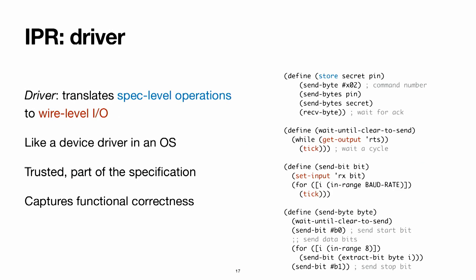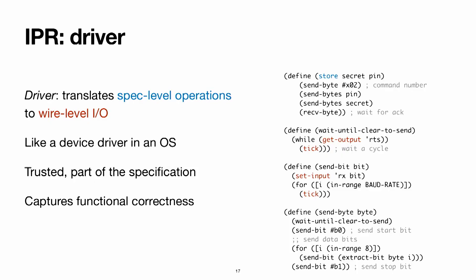In one direction we have a driver, which tells us how to drive signals on the wires to implement the store and retrieve operations — like a device driver in an OS. If I want to send a packet, I need to tell the driver how to poke the network card. The driver describes how to poke the pins of the HSM to implement the store operation, for example. This is a trusted part of our specification because it describes how a well-meaning user correctly uses the device.